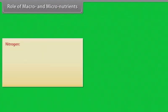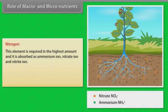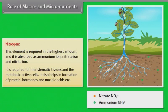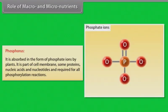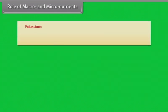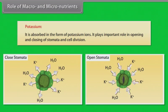Role of macro and micronutrients. Nitrogen: this element is required in the highest amount and is absorbed as ammonium ions, nitrate ions and nitrite ions. It is required for meristematic tissues and metabolically active cells. It also helps in formation of proteins, hormones and nucleic acids. Phosphorus: it is absorbed in the form of phosphate ions. It is part of cell membranes, some proteins, nucleic acids and nucleotides, and is required for all phosphorylation reactions. Potassium: it is absorbed in the form of potassium ions and plays an important role in opening and closing of stomata and cell division.